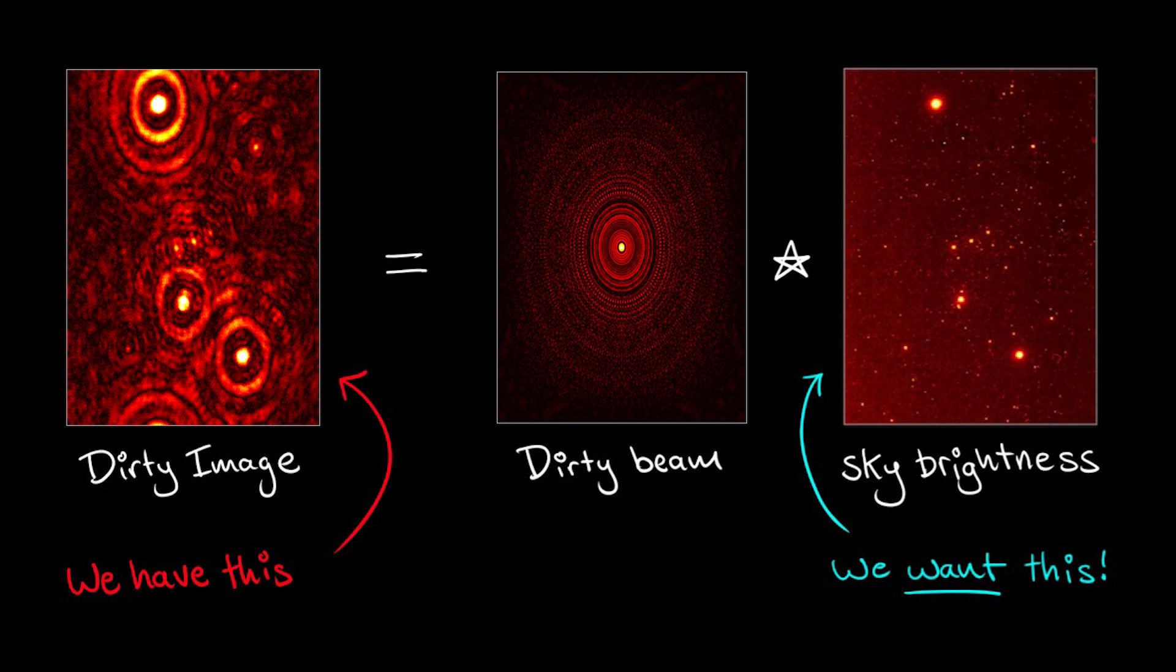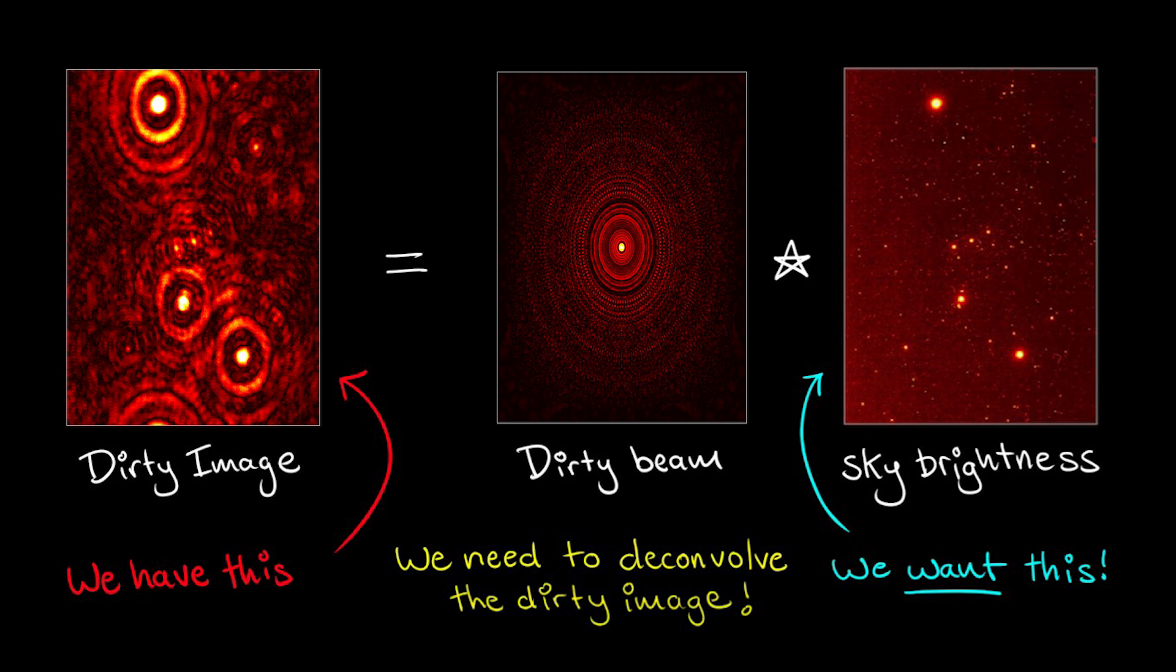To recover the true sky brightness distribution, we want to deconvolve the dirty beam from the dirty image in order to produce a model which best approximates the true sky brightness.